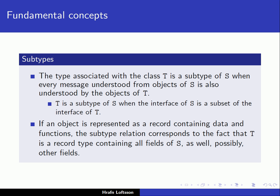When we discussed abstract data types, we had a data type called NewCounter2, which was a subtype of the counter data type, because every operation we could apply to counter we could also apply to NewCounter2. We can also say that T is a subtype of S when the interface of S is a subset of the interface of T.